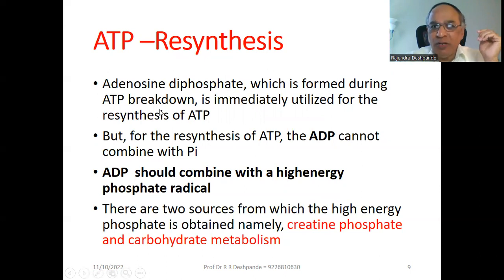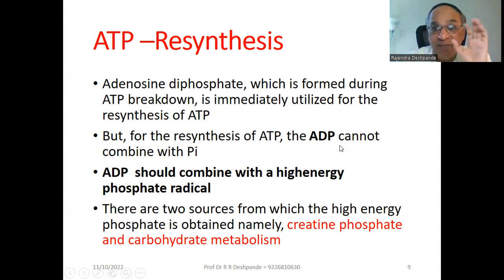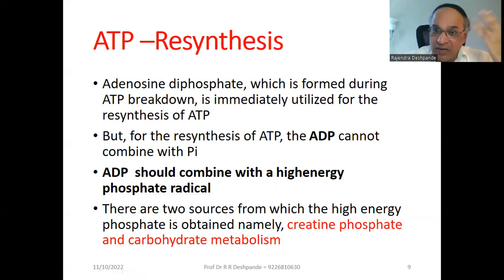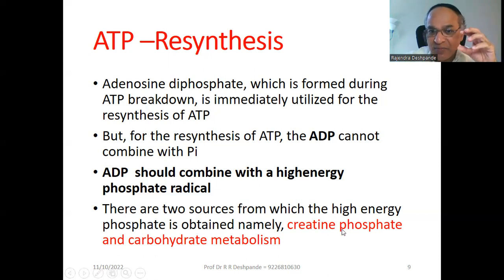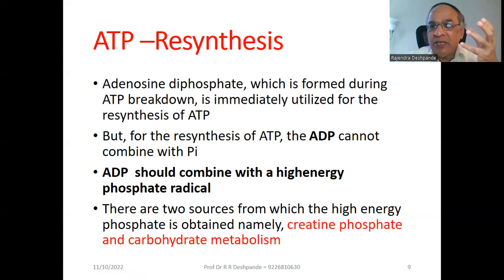Adenosine diphosphate formed during ATP breakdown is immediately utilized for the resynthesis of ATP. However, ADP cannot simply recombine with the same phosphate — it must combine with a high-energy phosphate radical. There are two sources from which high-energy phosphate is obtained: number one, creatine phosphate, and number two, carbohydrate metabolism.